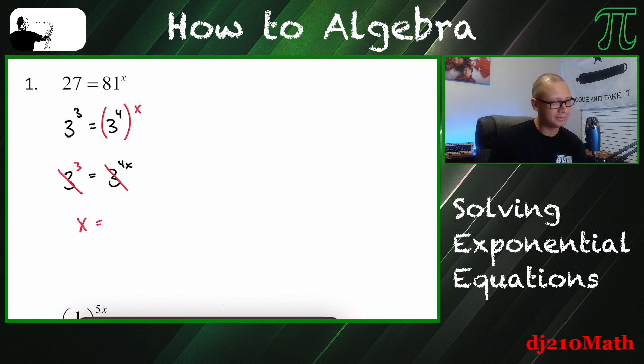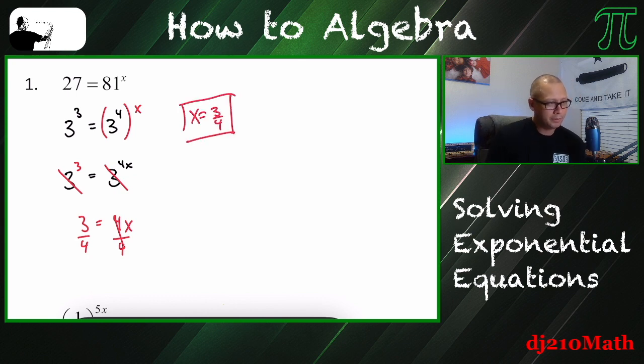So this should be 3, right? Because 3 cubed. Okay, 3 is equal to 4x. The exponents need to be equal. So solving for x, x is equal to 3 fourths. So again, rewriting the bases so that they match. That's the idea.